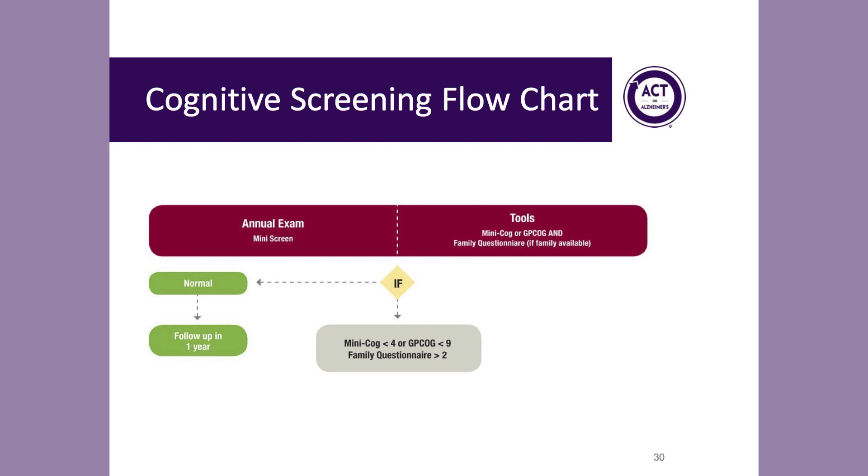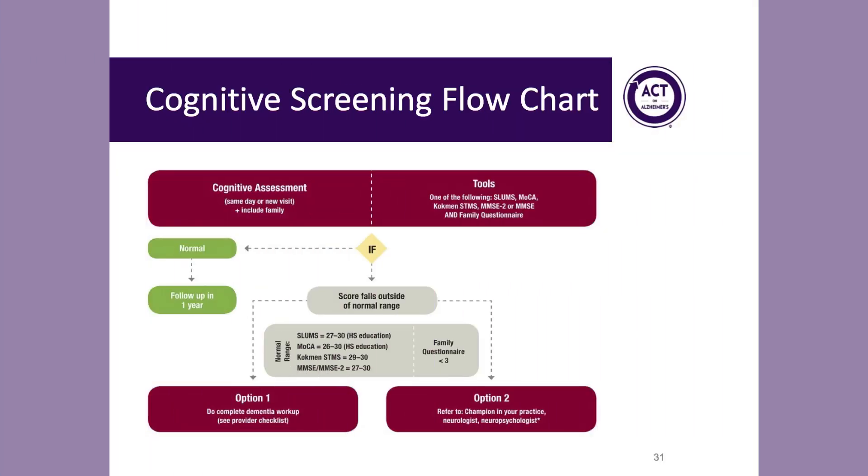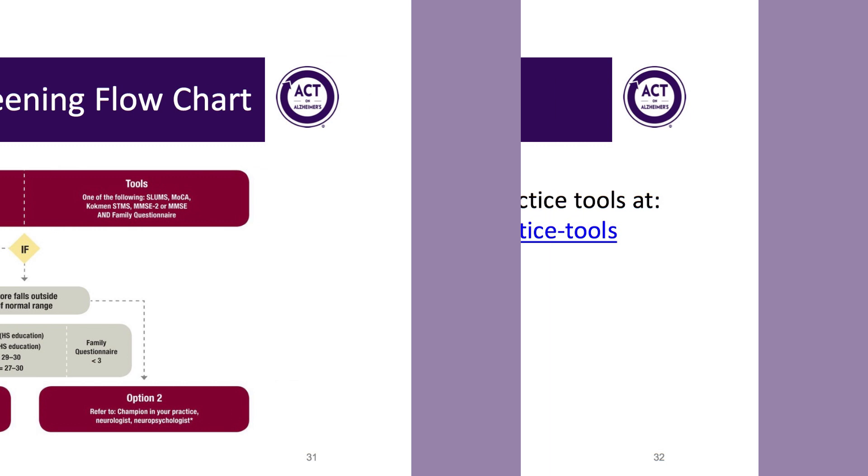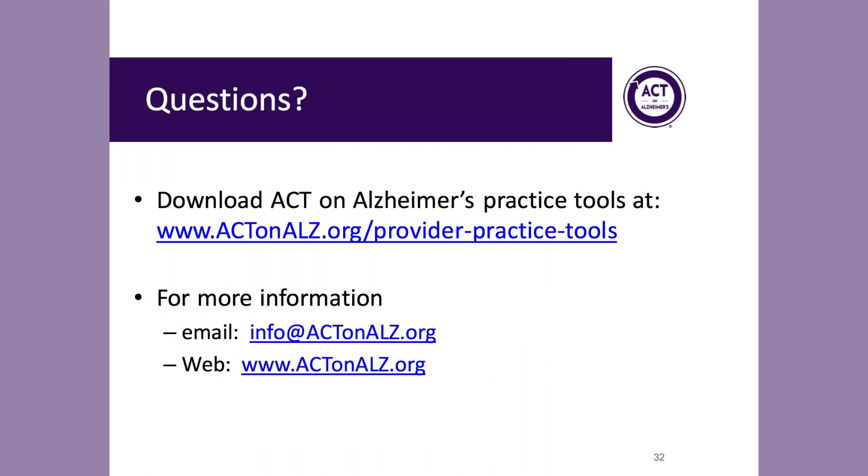This is a screenshot of the workflow for cognitive screening with patients. In the red banner on the right, it offers examples of initial cognitive screening measures to consider. The tool also provides guidance for how to move forward when patients pass or fail these screening tools. For more information and to download free copies of these evidence-based provider tools, please see the Act on Alzheimer's website at the link shown on your screen. You can also contact Act on Alzheimer's staff directly at the email address shown here.